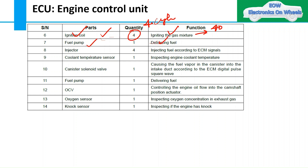The fuel pump delivers the fuel. Injectors — four injectors for a four-cylinder engine — inject fuel according to ECM signals. The coolant temperature sensor inspects the engine coolant temperature. The canister solenoid valve operates according to the ECM digital pulse square wave. The OCV (oil control valve) controls engine oil flow into the camshaft. The oxygen sensor inspects oxygen concentration in the exhaust gases. The knock sensor tells the ECM if the engine is experiencing knock.